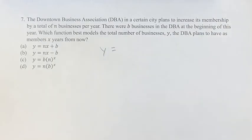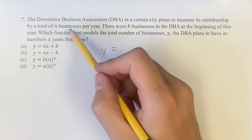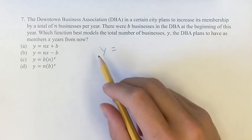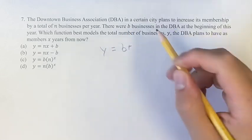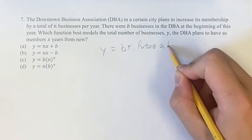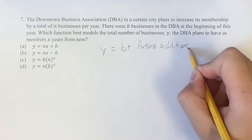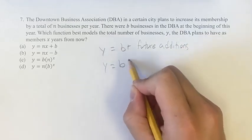So the way we can think about this is we have y, and this is equal to the current businesses, which is b, plus future additions. So we have y equals b plus...